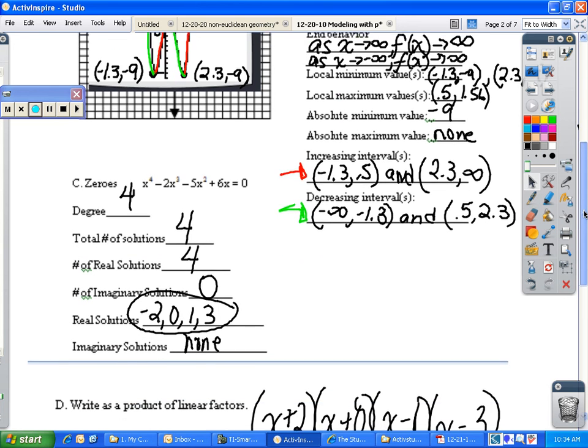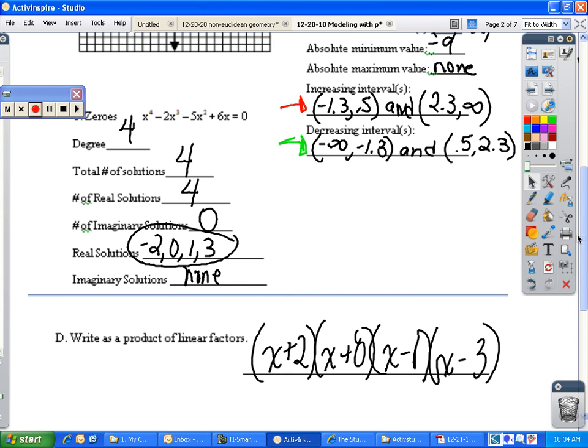Moving on, we then have the zeros of the function. This is a fourth degree polynomial. You know that it's a fourth degree because your highest power of the function is a 4. That's where I get my degree of 4. Total number of solutions should match your degree. Number of real solutions, since it crosses the x-axis 4 times, is 4. And those four values are negative 2, 0, 1, and 3. Again, taken from your properties. Since there are four real solutions and a total of 4, 4 minus 4 is 0. You have no imaginary solutions. And since you have none, you just write none.